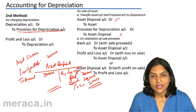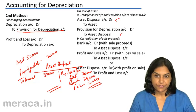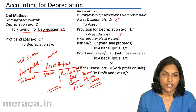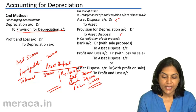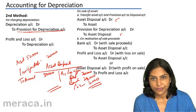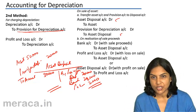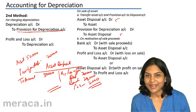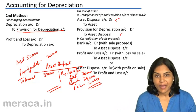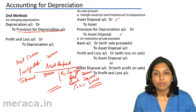On the other hand, if there is a profit, the entry would be asset disposal account debit to profit and loss account. Therefore, the only difference in recording depreciation is that the depreciation account is debited but the credit goes to the provision for depreciation account and not the asset account. As a result, the asset always continues to be shown at the original cost. In the balance sheet, the asset is shown at original cost less provision amount, giving us the book value.